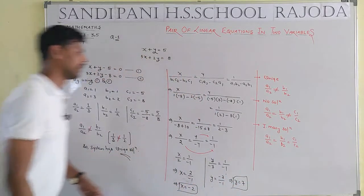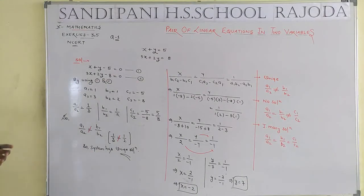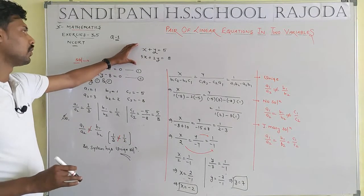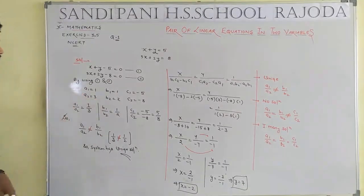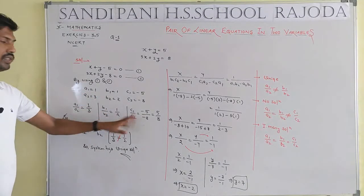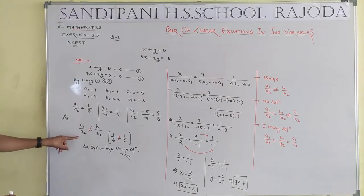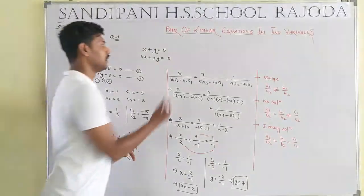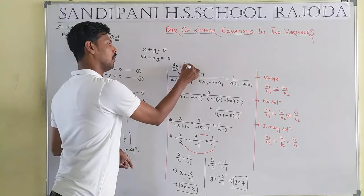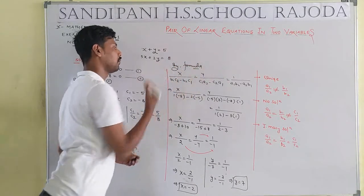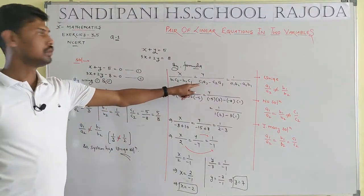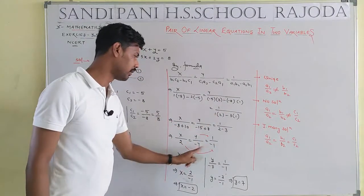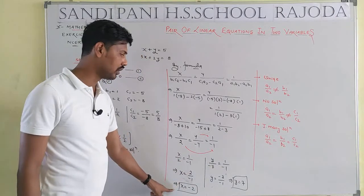The system has a unique solution. We verified: a1/a2 is not equal to b1/b2. Using the cross-multiplication formula and comparing x with the constant, we get x/2 equals y/minus 7 equals 1/minus 1. So x equals minus 2 and y equals 0.